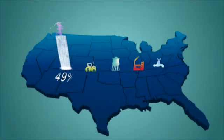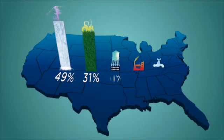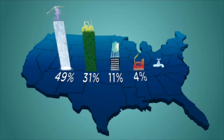In the United States, about 49% is used in thermoelectric power production, while agricultural irrigation makes up about 31%. 11% goes to public use in our cities and towns, 4% goes into industry and manufacturing, and 1% is domestic use.